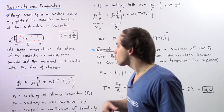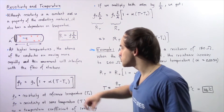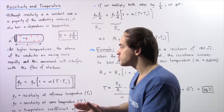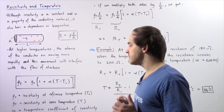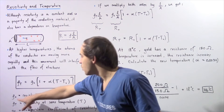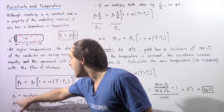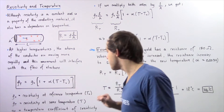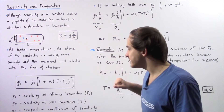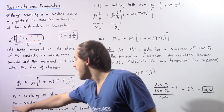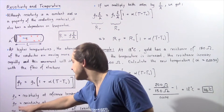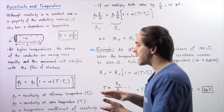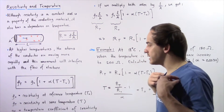So T₀ is our reference temperature, and T is the temperature at which we are examining the resistivity. Our ρ₀ is the resistivity at the reference temperature T₀, and ρ_T is the resistivity at some temperature T that we are examining.